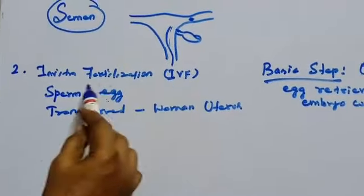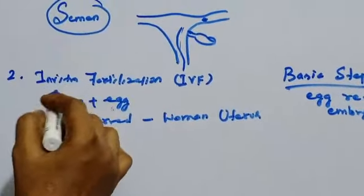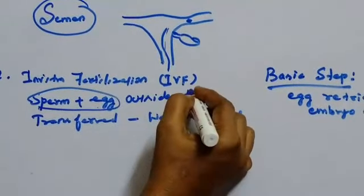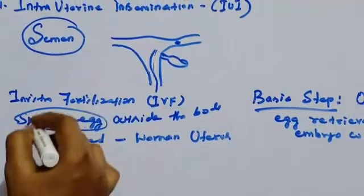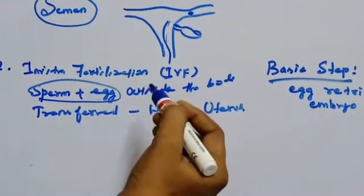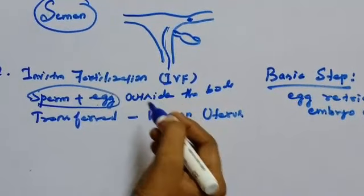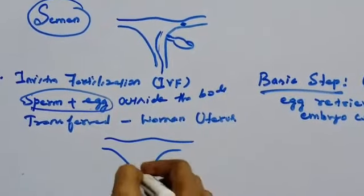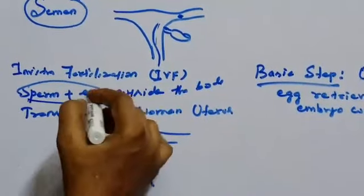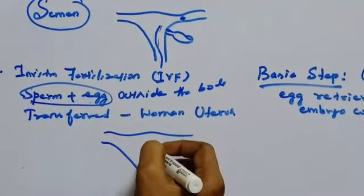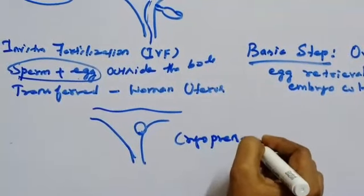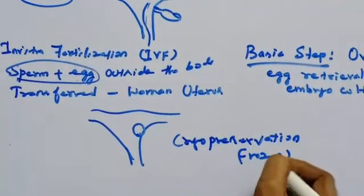Next we will see in vitro fertilization, that is IVF or test tube baby. In this technique, sperm and eggs are allowed to fertilize outside the body. Many eggs with many sperms are fertilized, and then one or two fertilized eggs are transferred into the woman's uterus where they implant in the uterine lining and start developing. The remaining embryos are preserved by a method called cryo-preservation — that is, the frozen method.